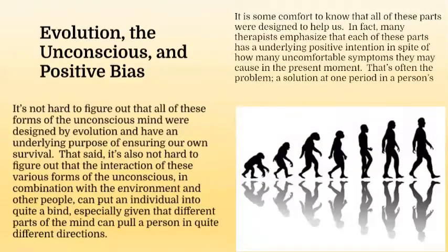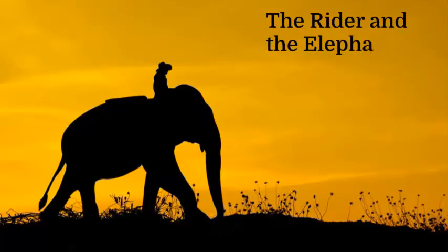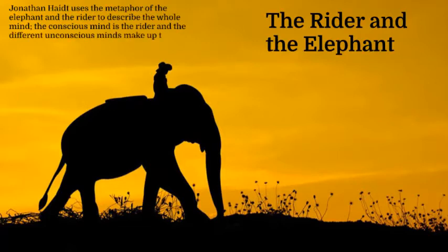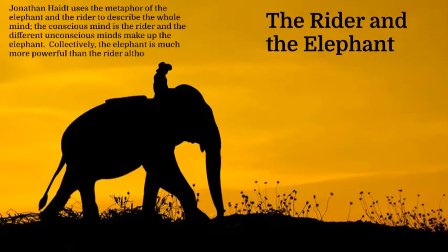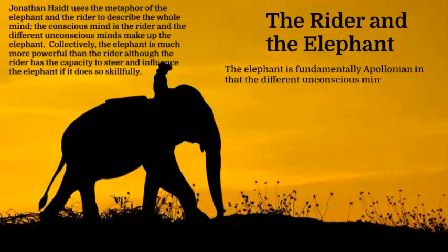The rider and the elephant. Jonathan Haidt uses the metaphor of the elephant and the rider to describe the whole mind. The conscious mind is the rider, and the different unconscious minds make up the elephant. Collectively, the elephant is much more powerful than the rider, although the rider has the capacity to steer and influence the elephant, if it does so skillfully. The elephant is fundamentally Apollonian, in that the different unconscious minds tend to resist change and stabilize identity. The conscious mind has the capacity to be Dionysian — to visualize change and to influence the various parts of the elephant to change.